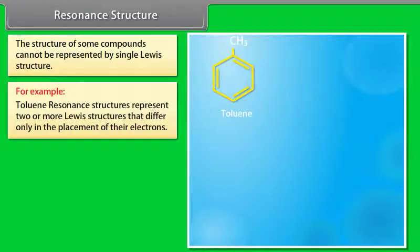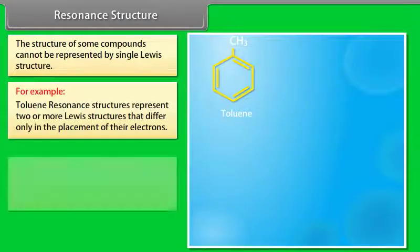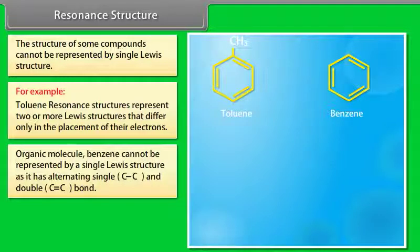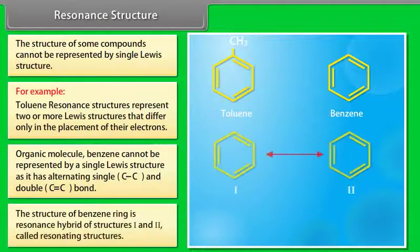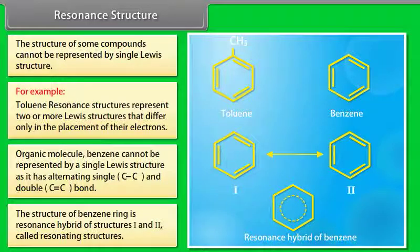Resonance structures: the structure of some compounds cannot be represented by a single Lewis structure. For example, toluene. Resonance structures represent two or more Lewis structures that differ only in the placement of their electrons. Benzene cannot be represented by a single Lewis structure as it has alternating single and double bonds; its structure is a resonance hybrid of two resonating structures.